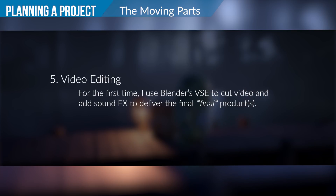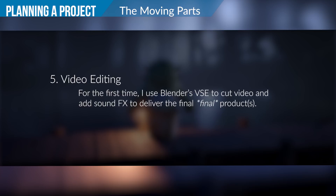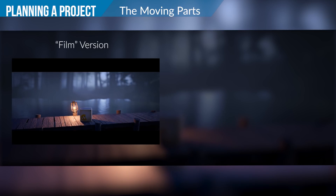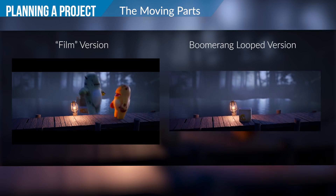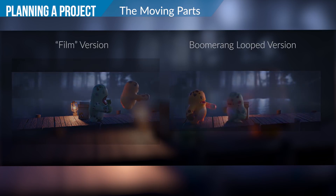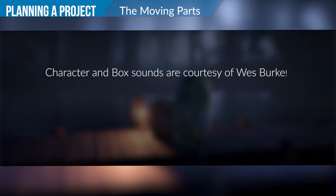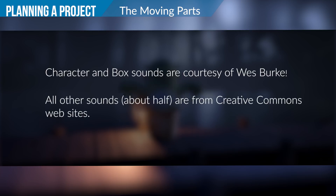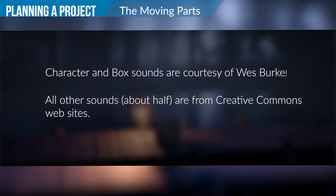Finally, the video editing will be done with Blender's Video Sequence Editor, or VSE for short. This means two versions will need to be edited: one film version, so to speak, complete with sound effects, and one silent boomerang loop version. The audio clips for the character and box are courtesy of Wes Burke, CGCookie founder and aspiring voice talent, and the rest of the audio I will be sourcing responsibly from the internet, which I will show you how to do.